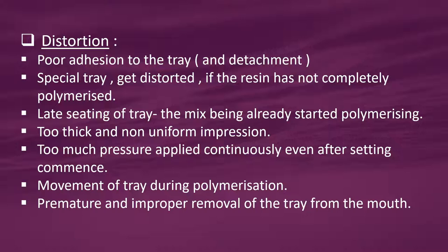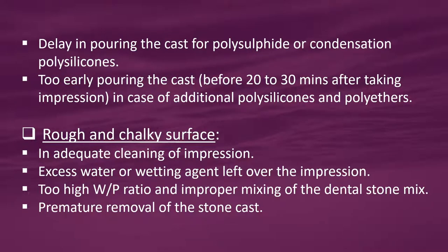Further causes of distortion: too thick and non-uniform impression; too much pressure applied continuously even after setting commences; movement of tray during polymerization; premature and improper removal of tray from the mouth; delay in pouring the cast for polysulphide or condensation polysilicones; too early pouring of cast before 20-30 minutes after taking impression in the case of additional polysilicones and polyethers. Rough and chalky surface — due to inadequate cleaning of impression, excess water or wetting agent left over the impression, too high water-powder ratio, improper mixing of dental stone, or premature removal of the stone cast.